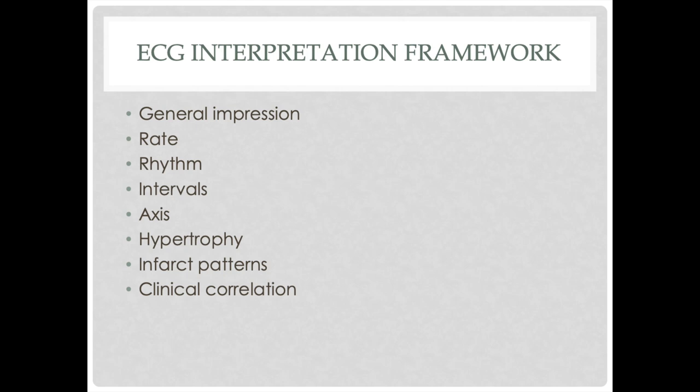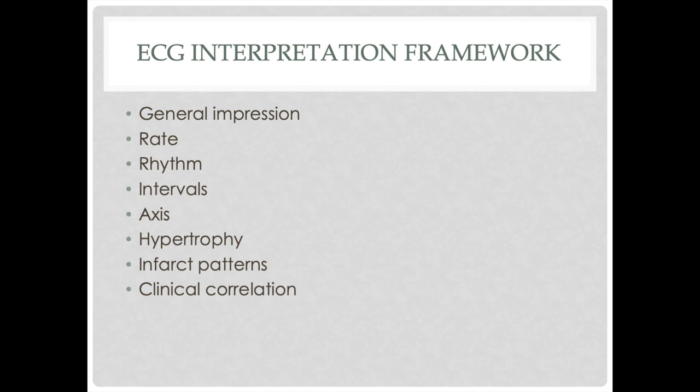To recap: general impression, rate, rhythm, intervals, axis, hypertrophy, infarct, clinical correlation to the patient — but really, 50, 120, potassium, MI. What do you think of that? What pattern do you use? What pattern were you taught? Let me know down in the comments. Click over here for another video, and here for the channel page and all videos. Make sure to like and subscribe. Till next time, this is Angry Bill — stay safe.